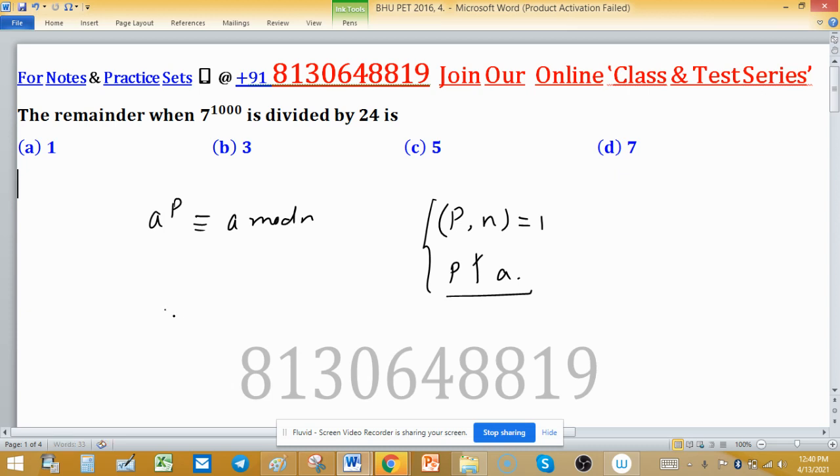So consider the value of a is 7 and value of p is 5 and n is 24, it is given. So 7 raised to the power 5 is congruent to 7 mod 24.